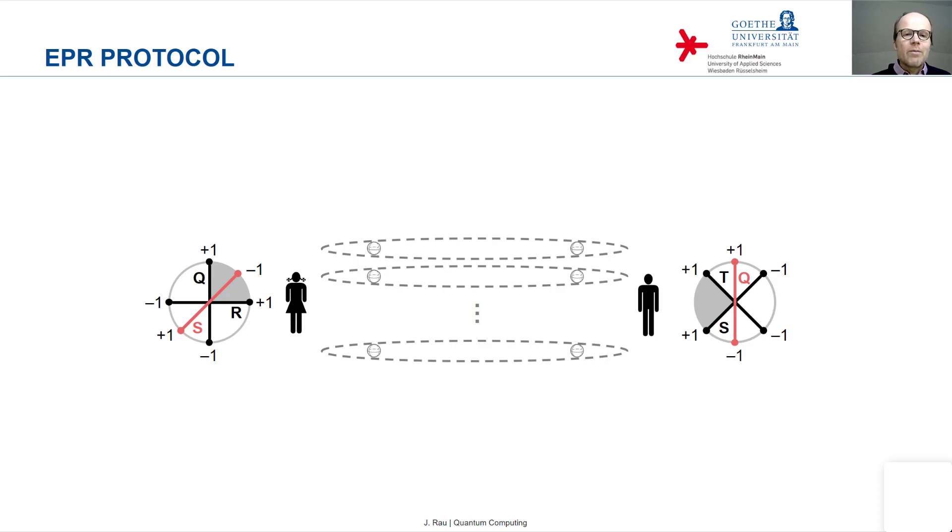But independently and randomly, they perform one of the three measurements on each member of the Bell pair. And then for different members of different Bell pairs, they perform different measurements in a completely random fashion.